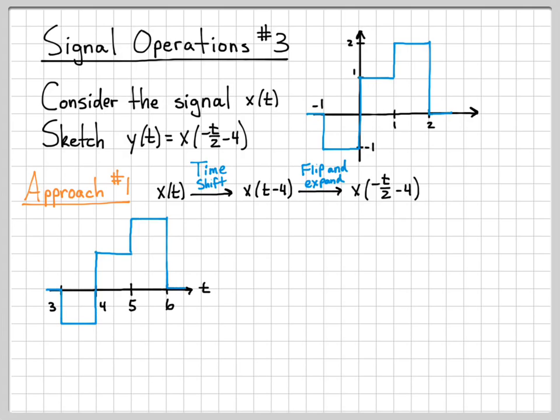The first thing I want to do is time shift my signal. I'm going to take all the values on the time axis and add 4 to them because it's a time shift of 4. So -1 plus 4 is 3, and 2 plus 4 is 6. That's what I get after my time shift.